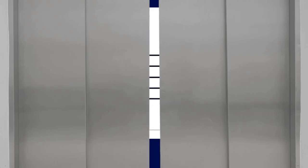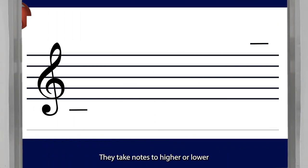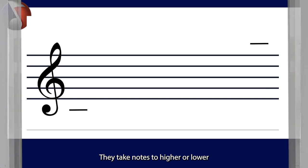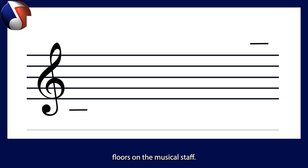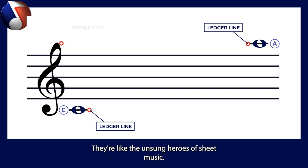Ledger lines are like musical elevators. They take notes to higher or lower floors on the musical staff. When notes go beyond the lines and spaces of the staff, these ledger lines come to the rescue. They're like the unsung heroes of sheet music.